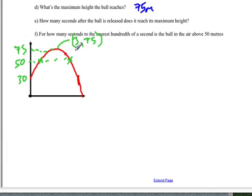Now, in part F, we're asked how many seconds to the nearest hundredth of a second is the ball in the air above 50 meters. Remember that we have a few points that we can identify on this graph, and I've just got it sketched here.